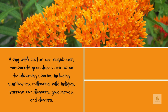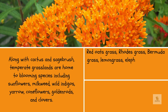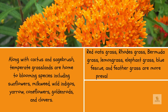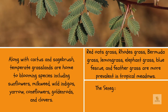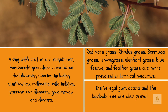Red oats grass, Rhodes grass, bermudagrass, lemongrass, elephant grass, blue fescue, and feather grass are more prevalent in tropical meadows. The Senegal gum acacia and the baobab tree are also prevalent on African savannas.